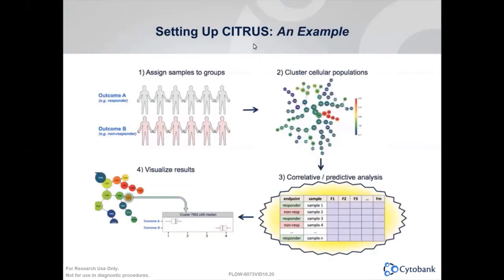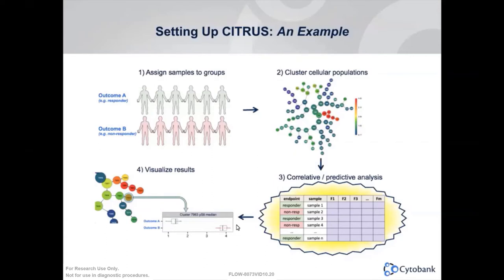Here's an example showing the setup of Citrus. First, you need at least two groups. Assign your samples to different groups based on different outcomes or endpoints, like responders or non-responders. Then you run Citrus to identify clusters of phenotypically similar cells across all samples, characterize the biological features of those clusters on a per-sample basis — using either correlative or predictive models — to identify the subsets or features that best predict the endpoints or identify all differences between two groups. Here, a particular cluster was discovered with differential phospho-S6 signal between the responder and non-responder groups.